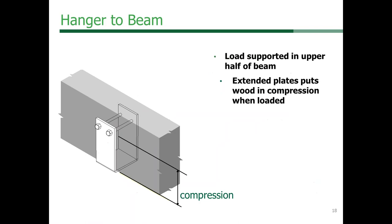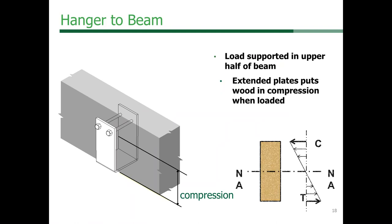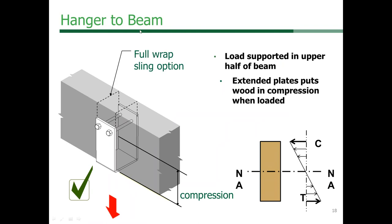A better solution for hanging loads is raising the connection into the upper compression portion of the wood beam. Even better is a sling wrap option — if the plate wraps around the top of the beam, it becomes a bearing-type connection rather than just a shear-type connection.